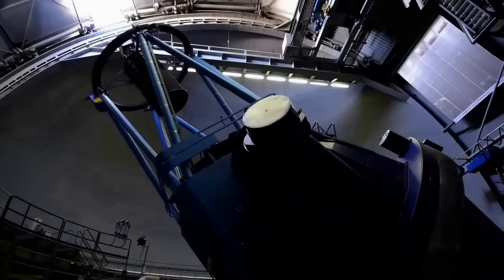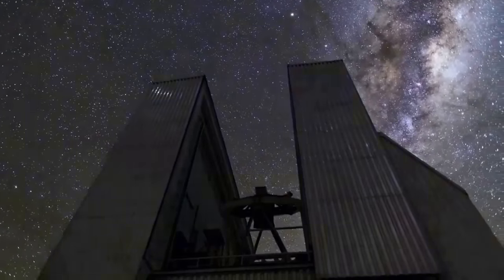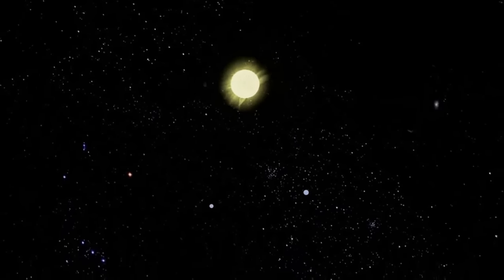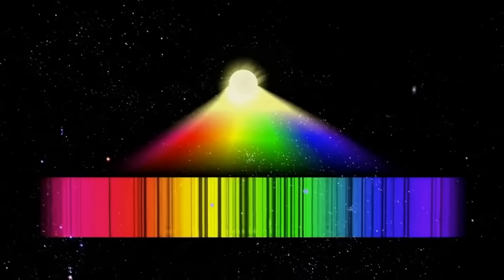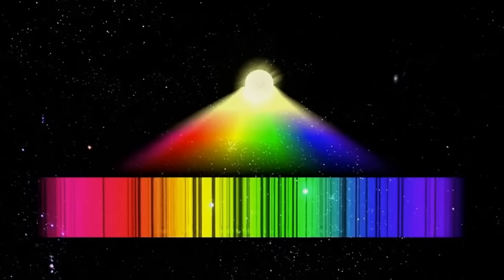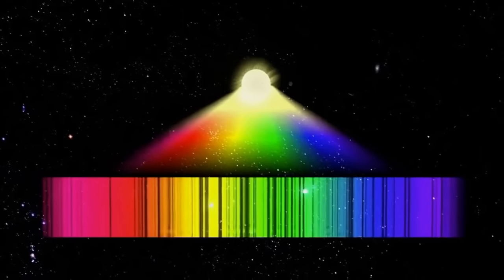They check their instruments. Everything is working, including their new spectrograph, a device that splits the starlight from Pegasus into rainbow colors. Hidden inside the colors are patterns of lines. By tracking the day-to-day movement of these lines, astronomers make a startling discovery.